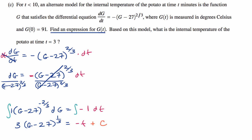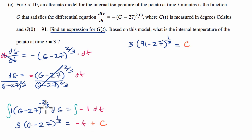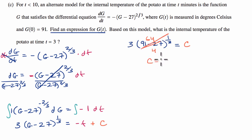Substituting in: 3 times 91 minus 27 to the 1/3rd power equals negative zero plus c. So 91 minus 27 is 64, and 64 to the 1/3rd power is 4. Therefore 3 times 4 equals 12, so c equals 12.